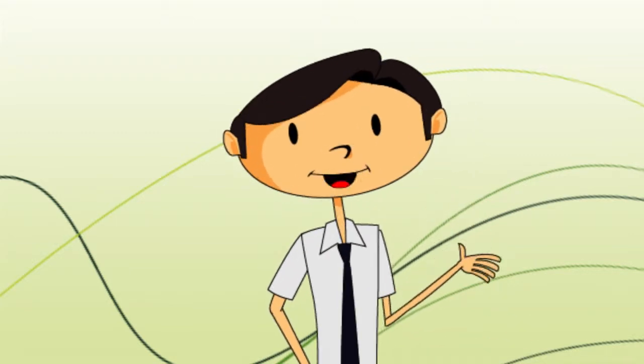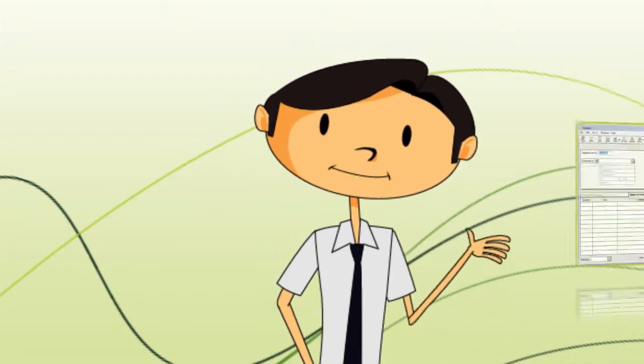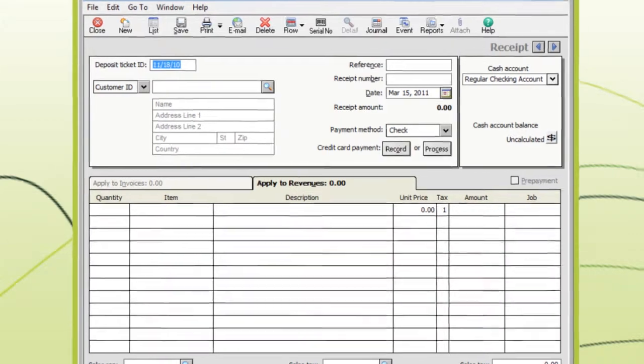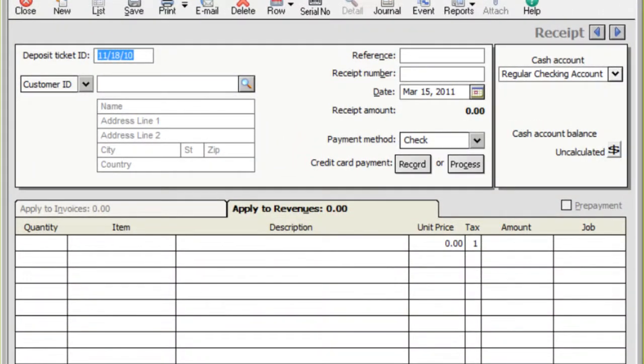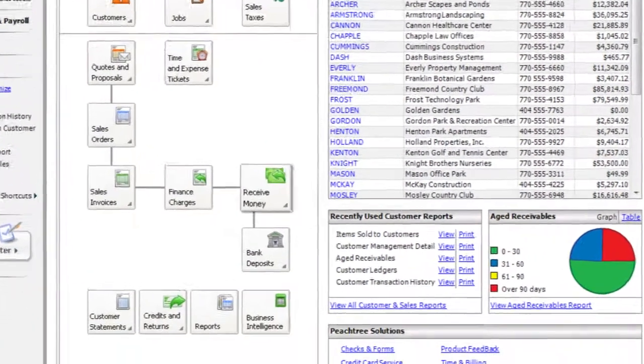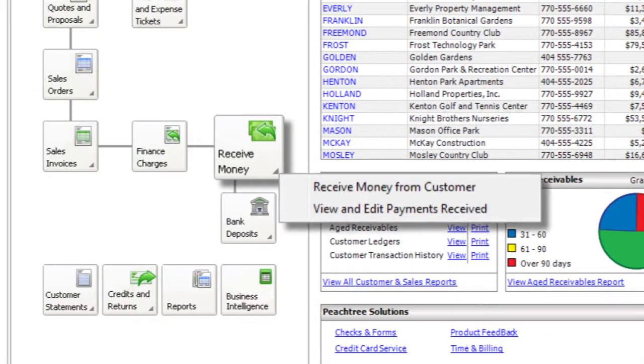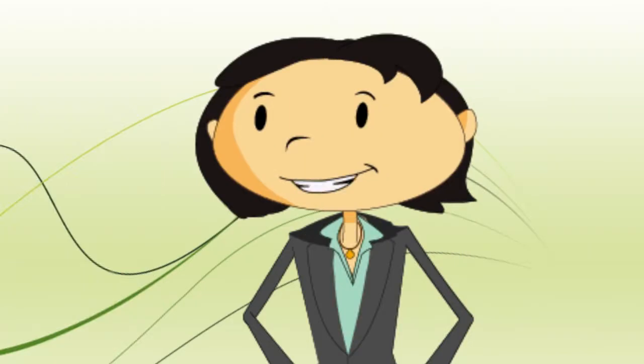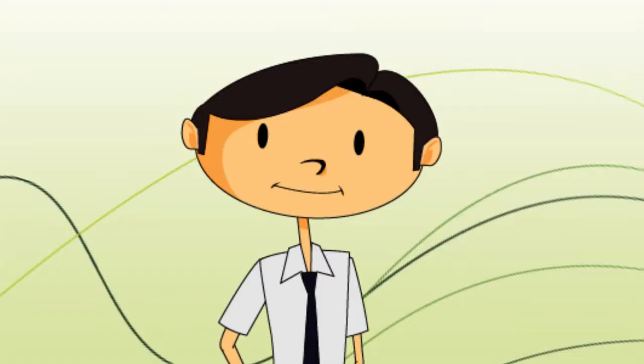Okay, Kim, so once I collect the cash, then what? You can use the Receipts window to enter money you collect from your customers. And I can get to the Receipts window from the Customer Management tab, right? That's right. Or you can go to Customers and Sales, Receive Money, then Receive Money from Customer. That's cool. You can also process credit cards and apply money you've collected to outstanding invoices.